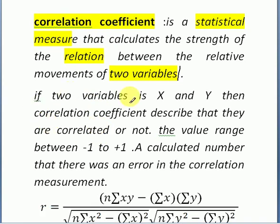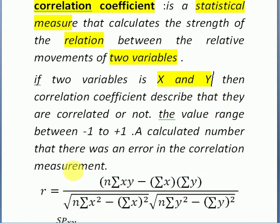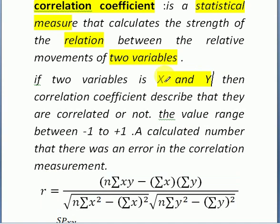For example, if the two variables are x and y, the correlation coefficient — the r value — describes whether they are correlated or not. The r value describes whether they are related or not, meaning the relation can be positive or negative.